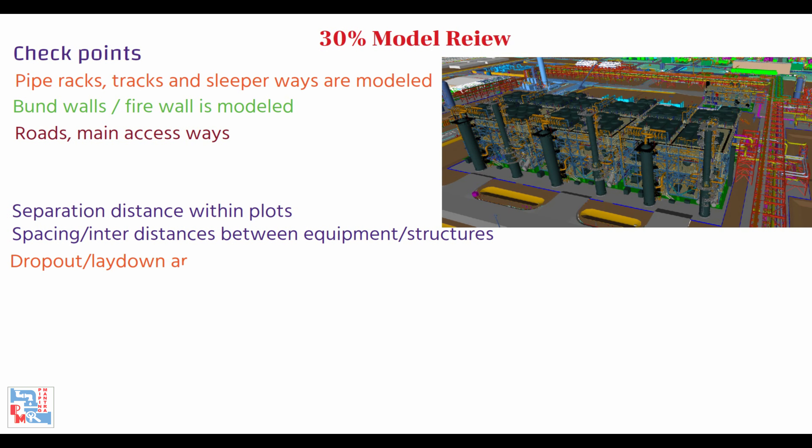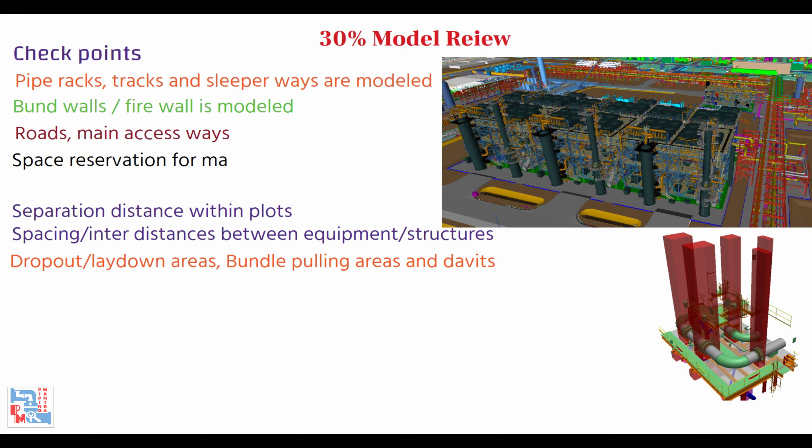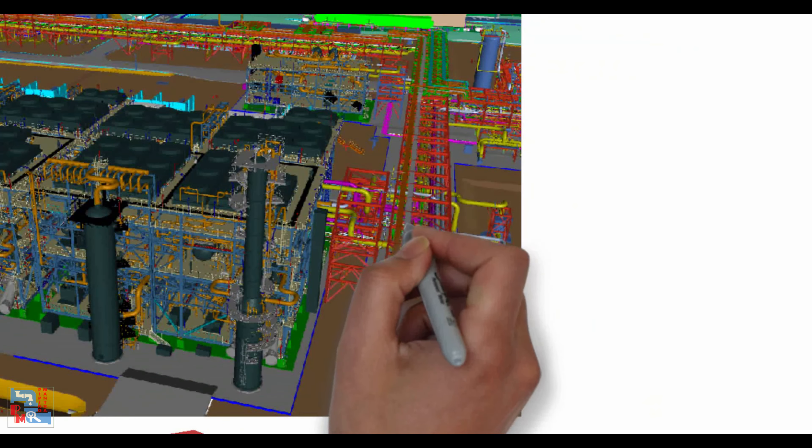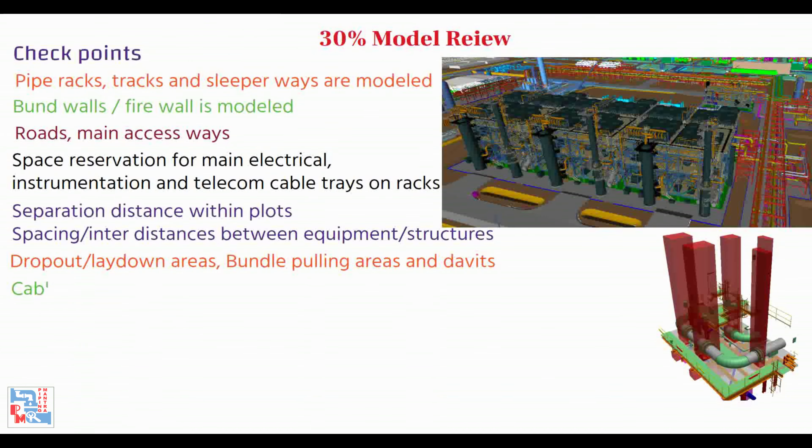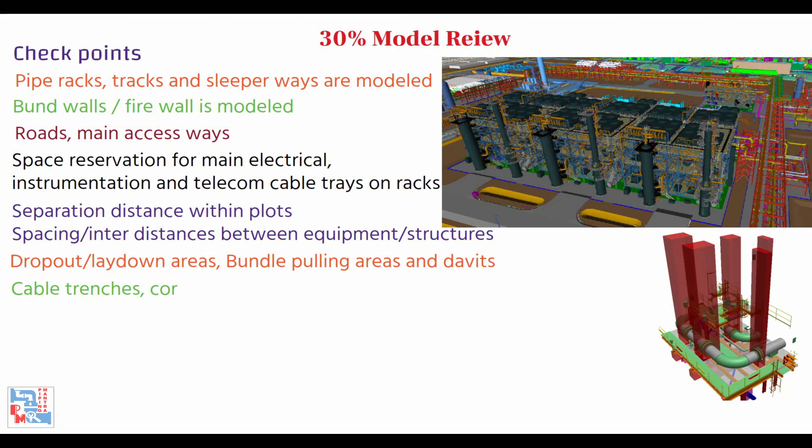Dropout or laydown areas, bundle pulling areas and davits are modeled and checked. Space reservation for main electrical, instrumentation, and telecom cable trays on racks or cable trenches and corridors are modeled and checked.